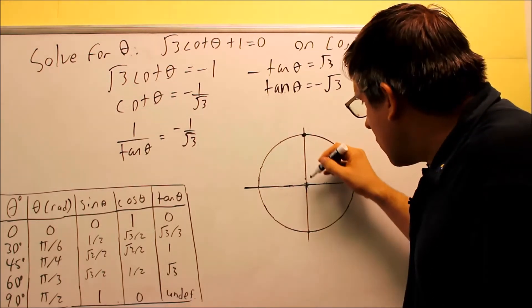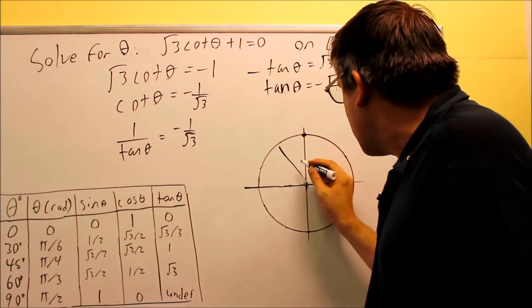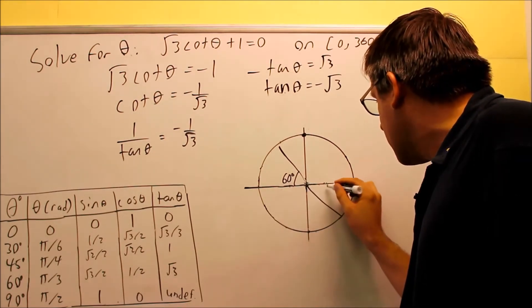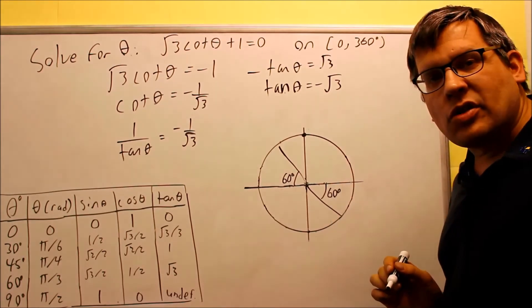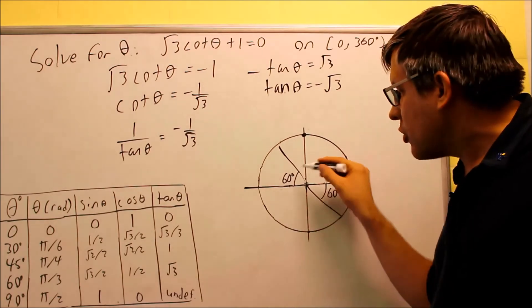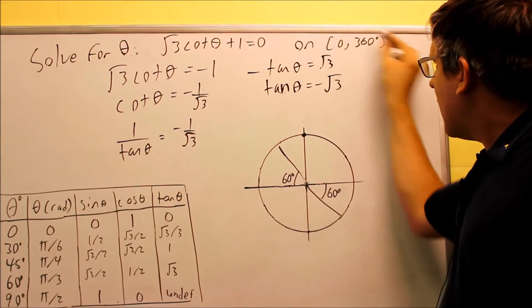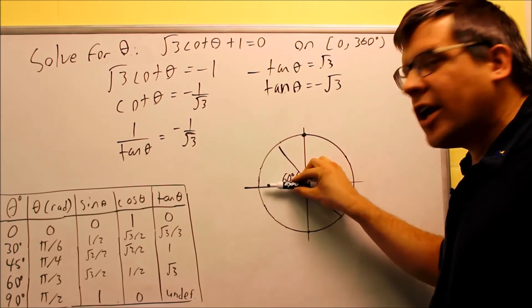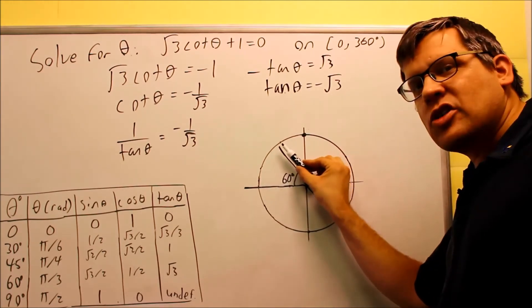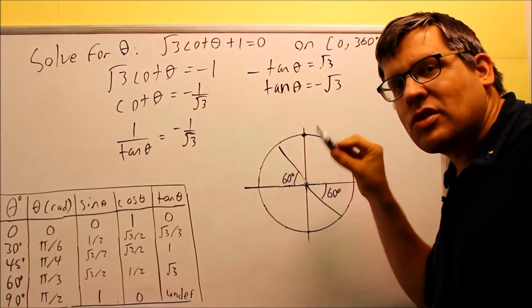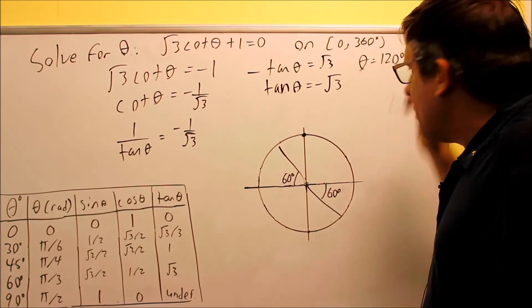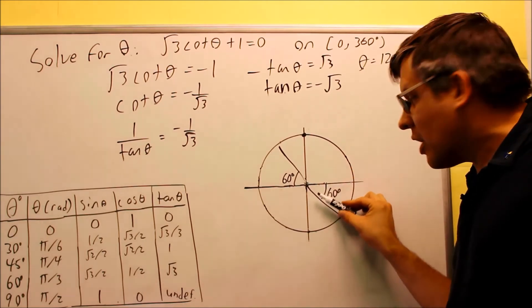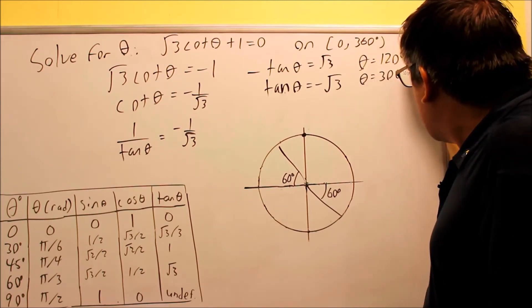So the 60 degrees is drawn in, and angles are always measured from the x-axis. We have 60 degrees in quadrant 2, and we're going to draw another one in quadrant 4 — that angle is also 60 degrees from the closest x-axis. We have to express these as angles between 0 and 360; we don't want to use negative angles. In quadrant 2, it's 180 minus 60, which gives us 120. So our first answer is 120 degrees. In quadrant 4, it's 360 minus 60, which gives us 300. So our second answer is 300 degrees.